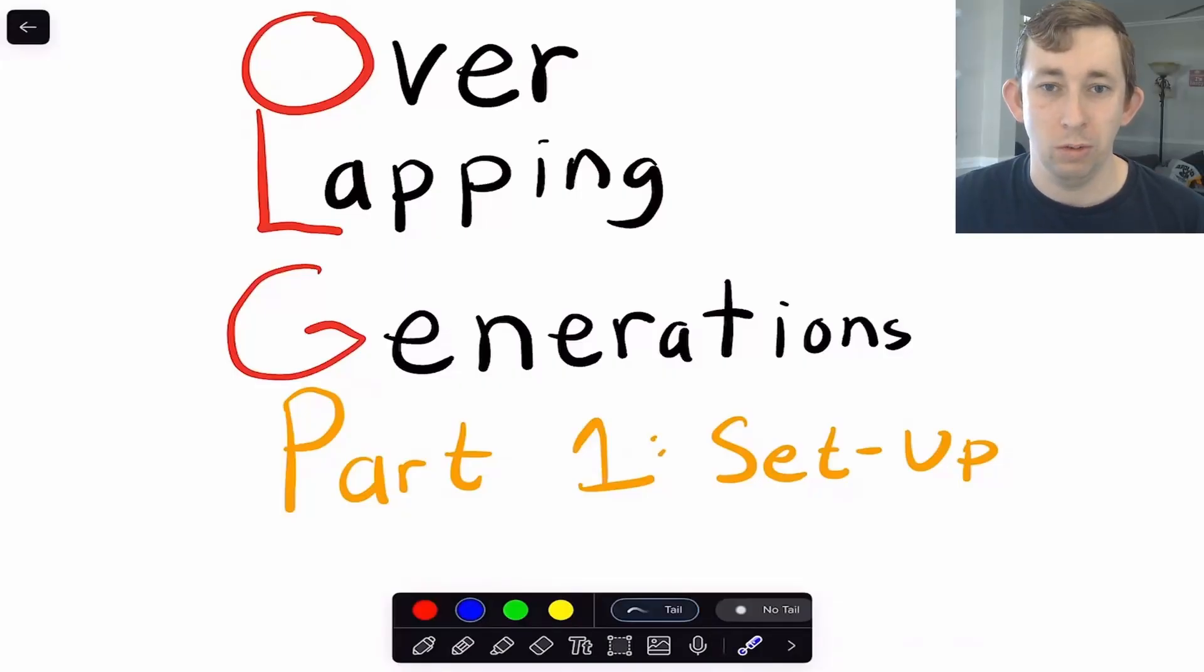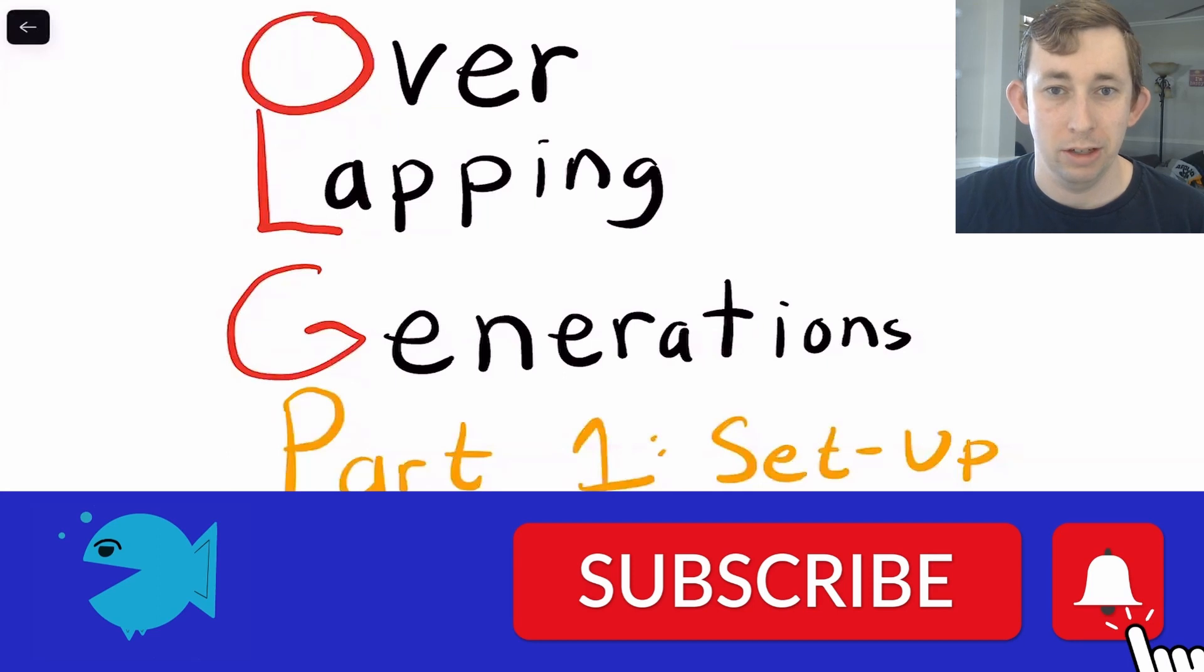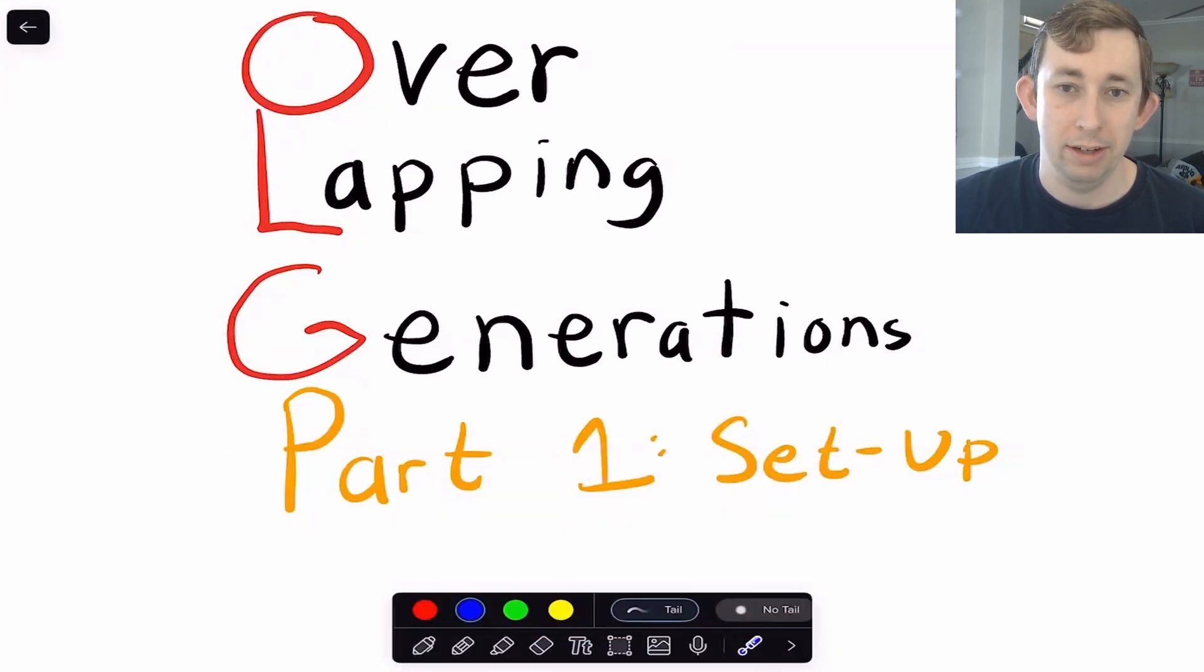Hi guys, welcome back to In Case of Econ Struggles, and welcome to an Overlapping Generation Struggle. It's part of the Advanced Macro Struggles, where we're going to start talking about the Overlapping Generations Model. Similar to how I talk about other models, it's going to be in a couple of parts. This is part one, where we're going to talk about the setup of the Overlapping Generations Model.